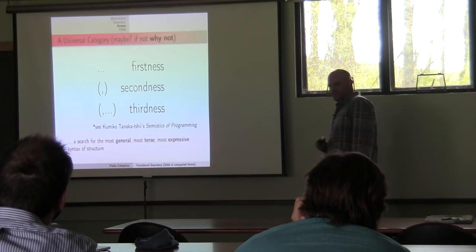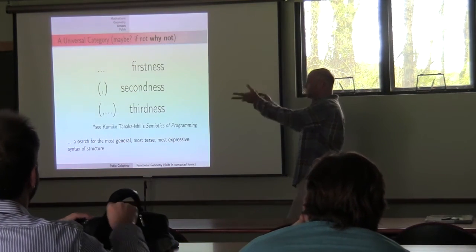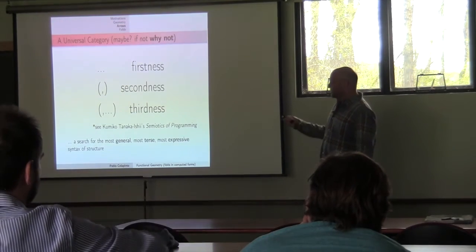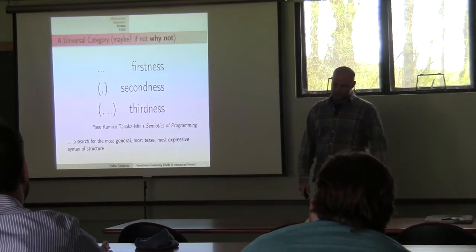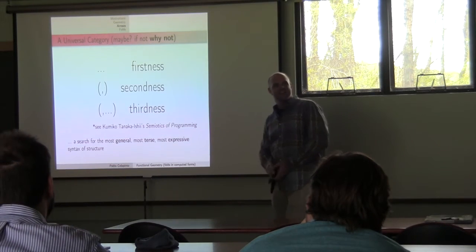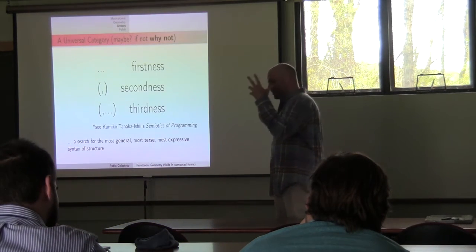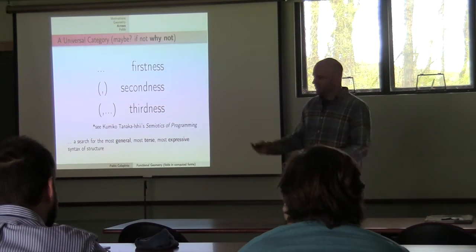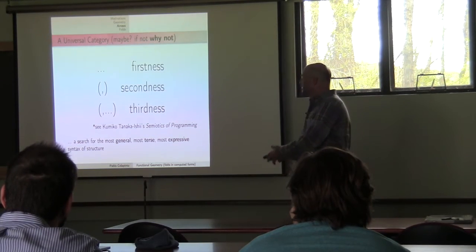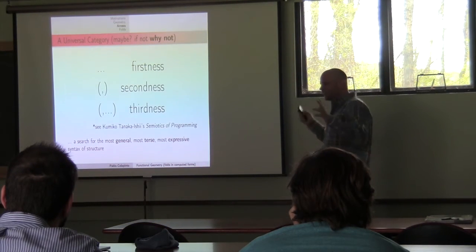These are sort of built into the semantics of the type, at least as of C++17. Or we could design them ourselves. We want to build some universal way of building things — the most general, most terse, most expressive way — because I want to be able to express my algebra that way. I want to say: this is the most terse, expressive, and generic way to describe space with the most generic, terse, and expressive way to describe computation.